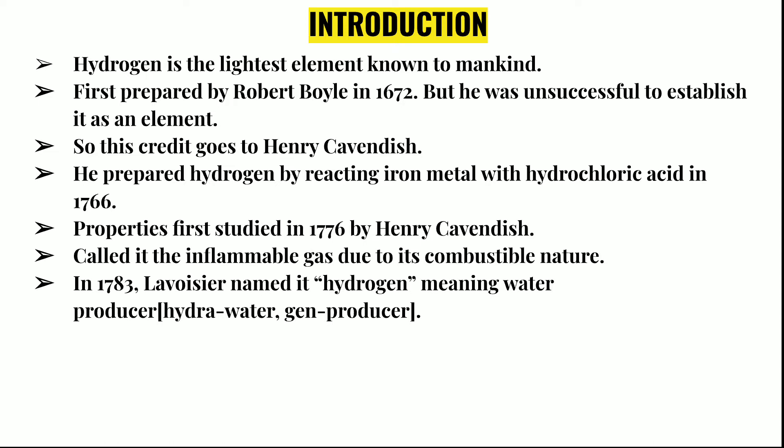However, Robert Boyle was unsuccessful to establish it as an element. So Henry Cavendish was credited — he later prepared hydrogen from iron metal by reacting iron metal with hydrochloric acid in 1766. Henry Cavendish was credited for discovering hydrogen. But it was first prepared by Robert Boyle. The properties of hydrogen were first studied by Henry Cavendish in 1776.